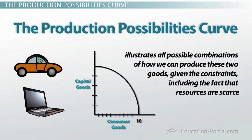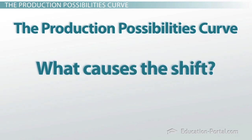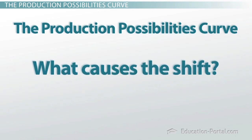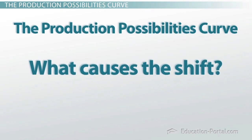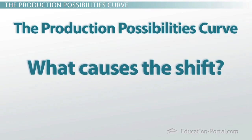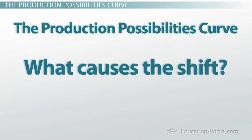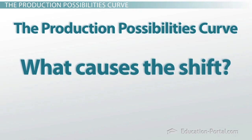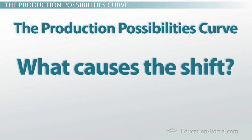The question we're answering in this lesson is: what causes the Production Possibilities Curve to shift? Before we answer this, let's review some of the basic ideas about the Production Possibilities Curve using two types of curves.